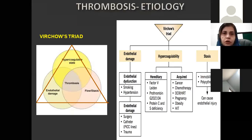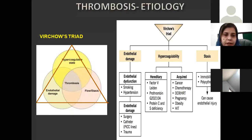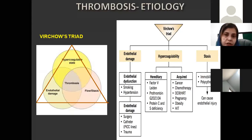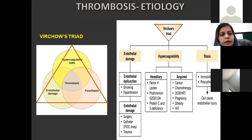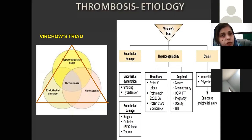Coming to the etiology — the cause of any particular disease. There was a famous scientist by the name of Virchow who gave this triad of conditions responsible for causing thrombosis. These include endothelial damage or damage to the normal endothelium. Then there is a disturbance of the blood flow — normal blood flow, if it is disrupted, either it slows down, which is stasis, or it becomes turbulent, which is an irregular flow.